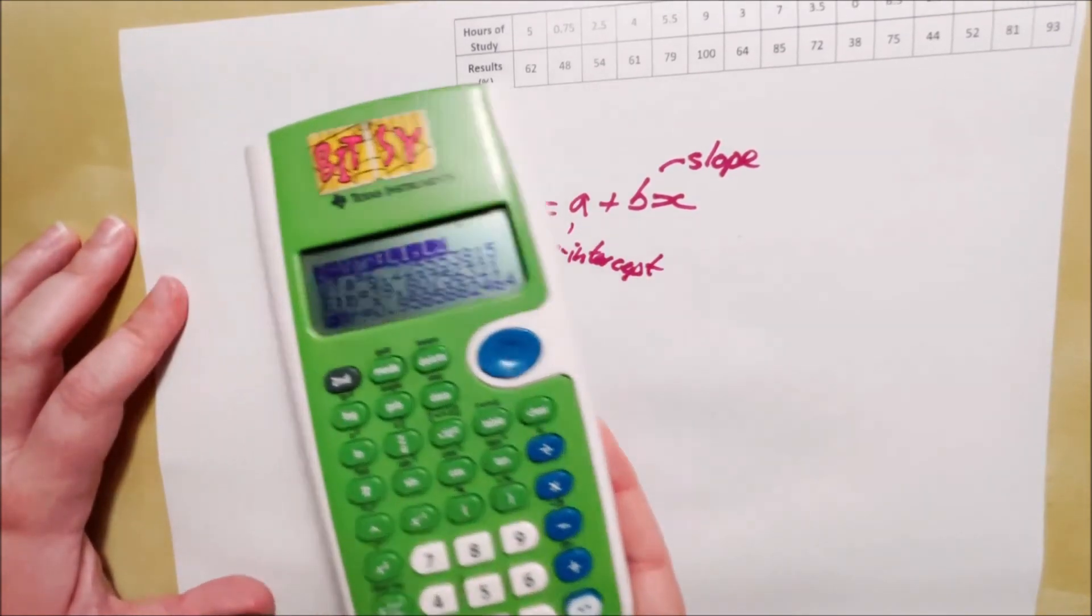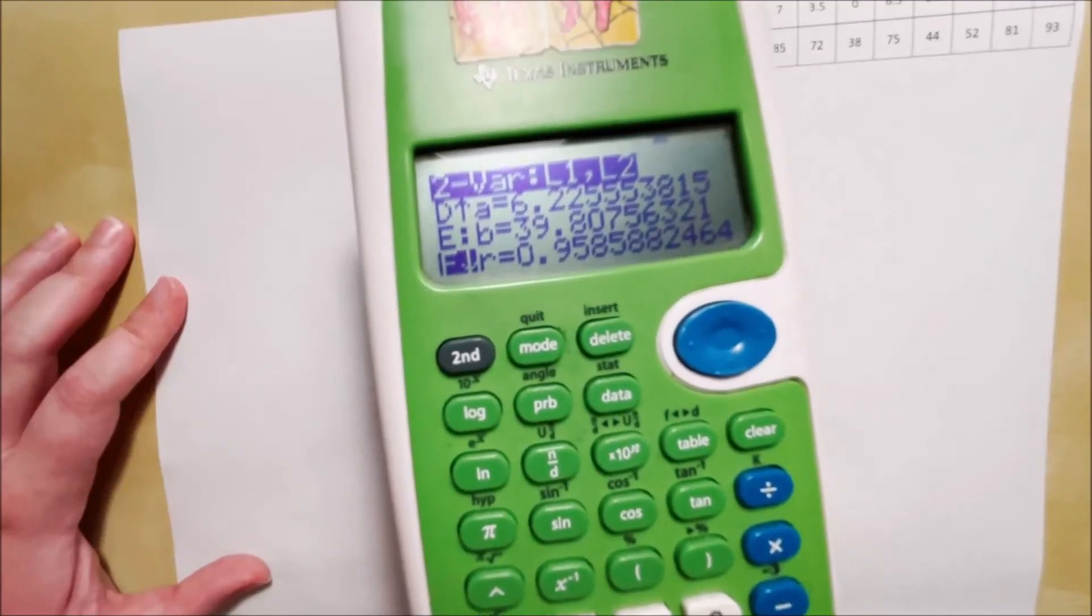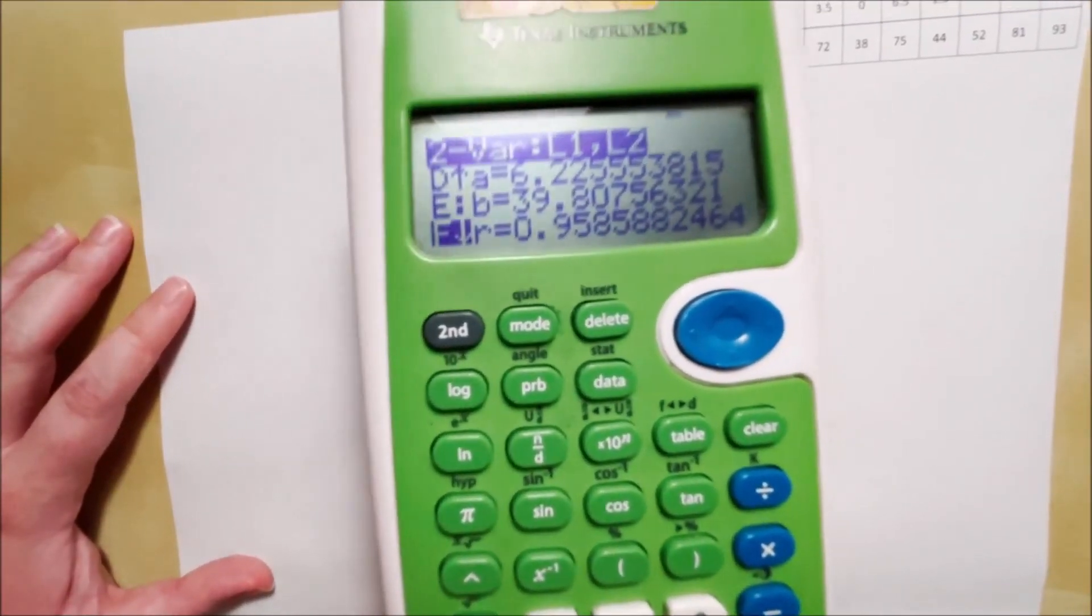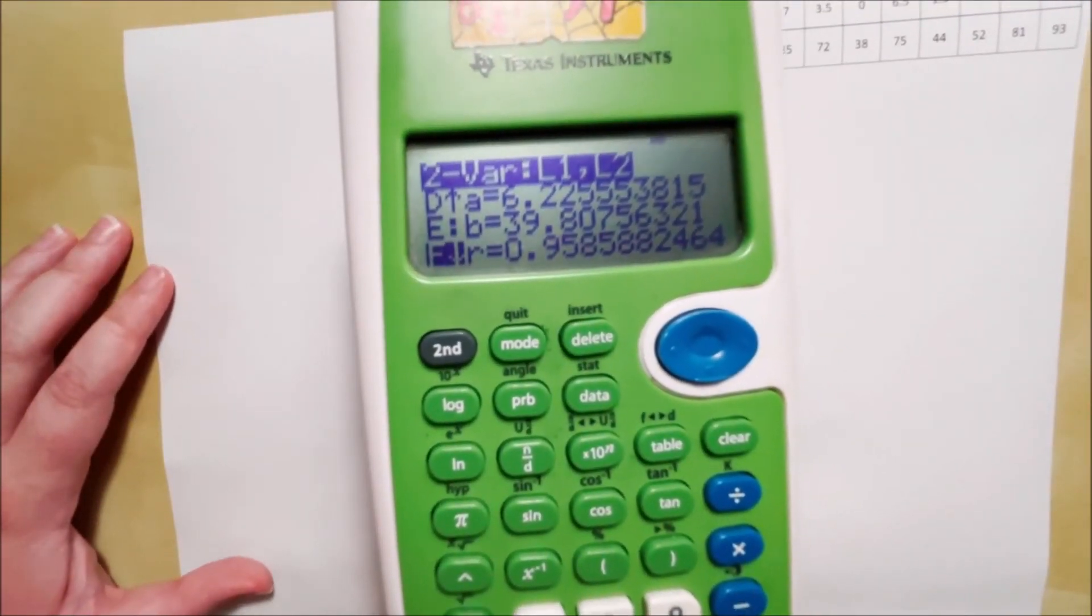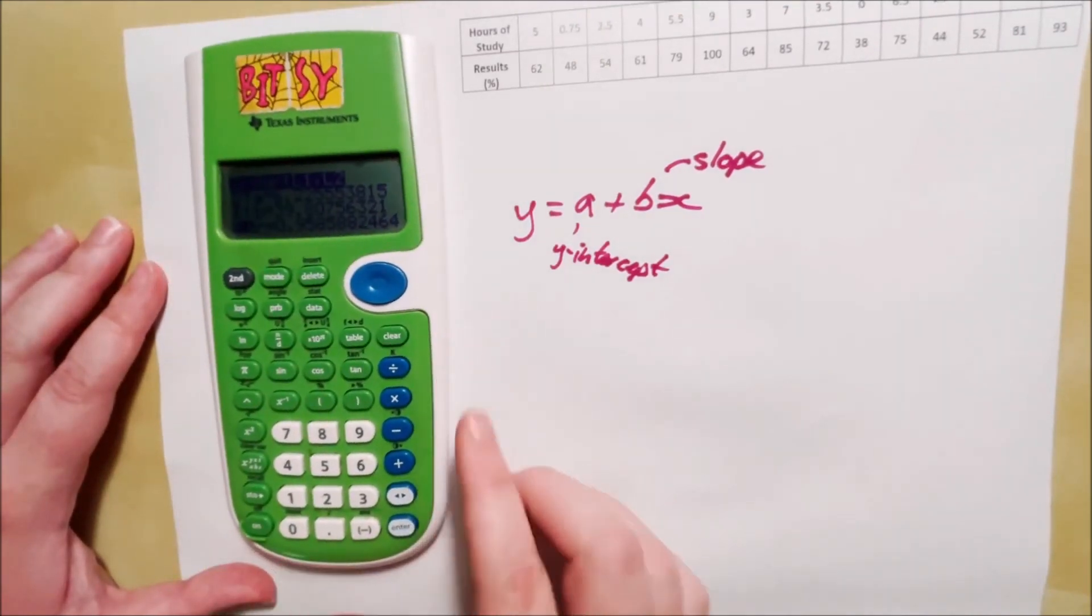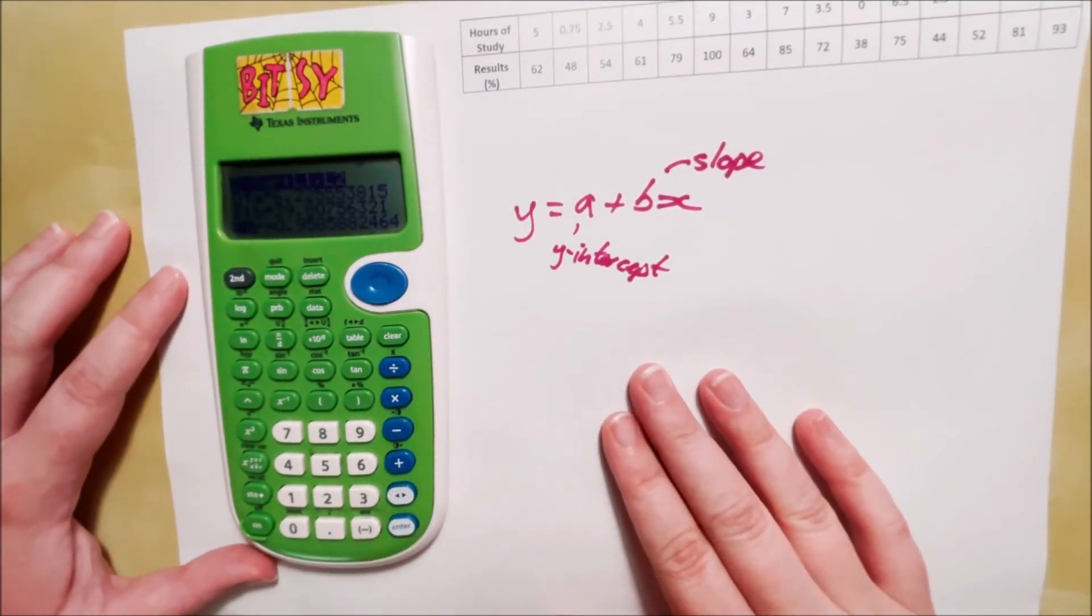Now, unfortunately, they're the wrong way round in our calculator here. And that's because there's no sort of standardized convention about how we write the equation of a straight line and what symbols we use.